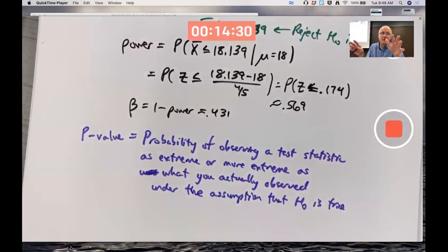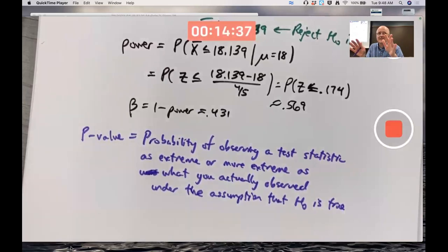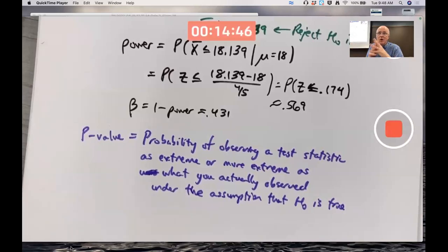That's the common misperception — that the p-value is the probability that the null is true, it's small, therefore we think the null is false. No, that's not what it is. Nobody can figure out the probability that the null is true. Nobody can do such a thing. It's impossible, not even a well-defined question probably.